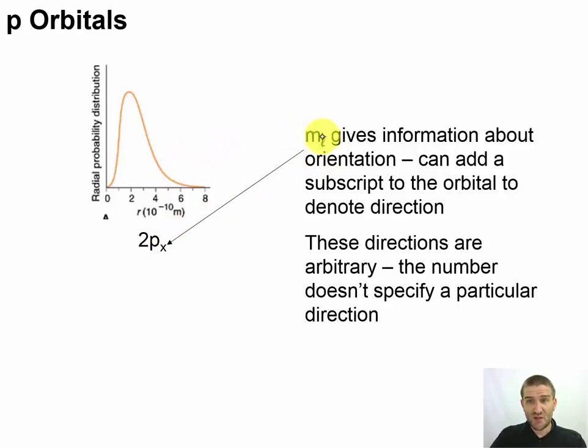Now, the subscript is telling us information about the direction it's sitting. That's going to be even more important if we're talking about the d orbitals, and you'll see that in a separate video. This is just telling us the direction that it lies, though. And these directions are completely arbitrary. It doesn't specify a real direction, because remember, this thing is rotating in space. We're just locking it in and looking at it from our own perspective.